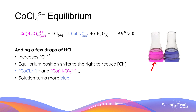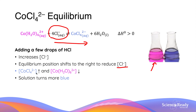Adding a few drops of hydrochloric acid will increase the concentration of chloride ions, which is one of the reactants of the equation. As a result, applying Le Châtelier's principle, the equilibrium position will shift to the right hand side in order to reduce chloride concentration. So if the equilibrium shifts to the right hand side, the concentration of dehydrated cobalt chloride increases while the concentration of hydrated cobalt ions decreases, and the solution will turn more blue.